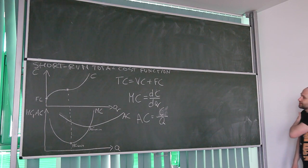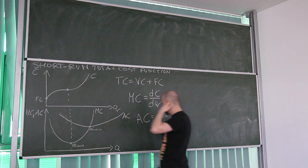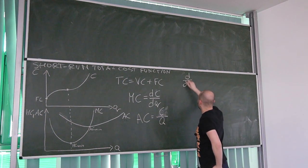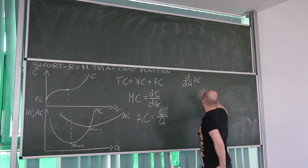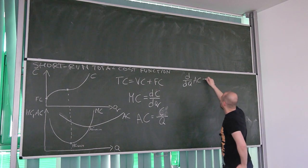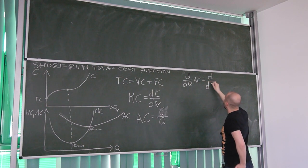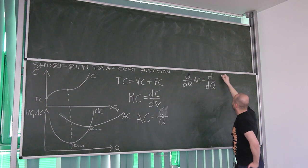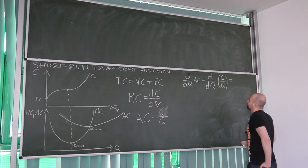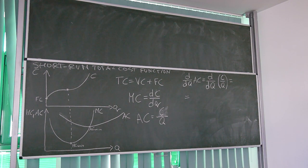What we are going to do now is prove that. To find the minimum of average cost, we simply need to find the derivative of average cost and set it equal to zero. If we are finding the derivative of average cost, what we are actually differentiating is the expression c over q — total cost over quantity. This is a quotient, so it's appropriate to use the quotient rule.